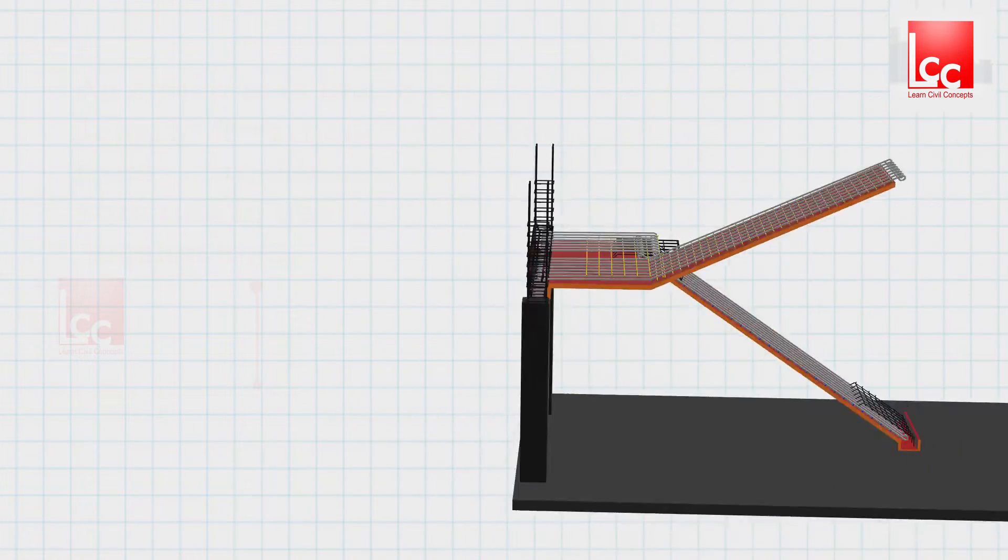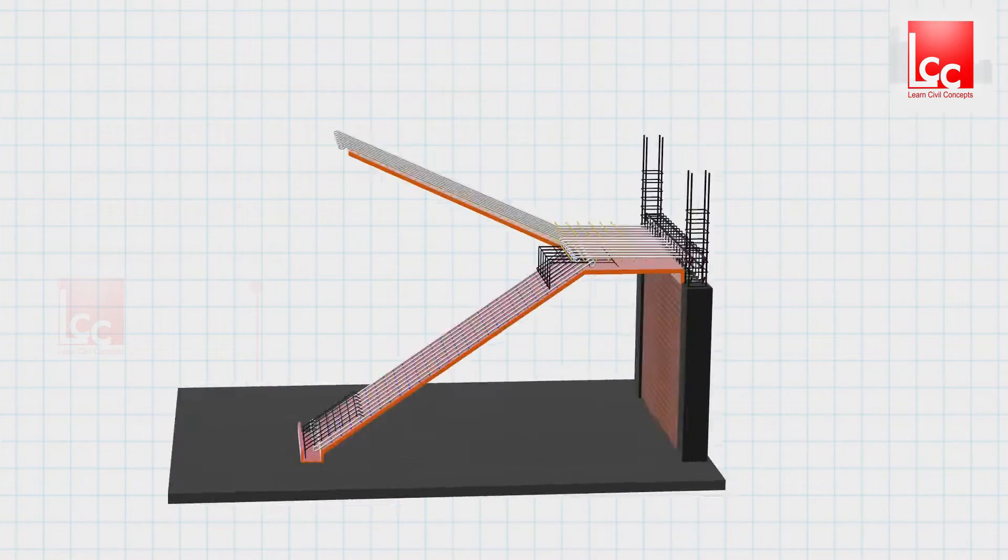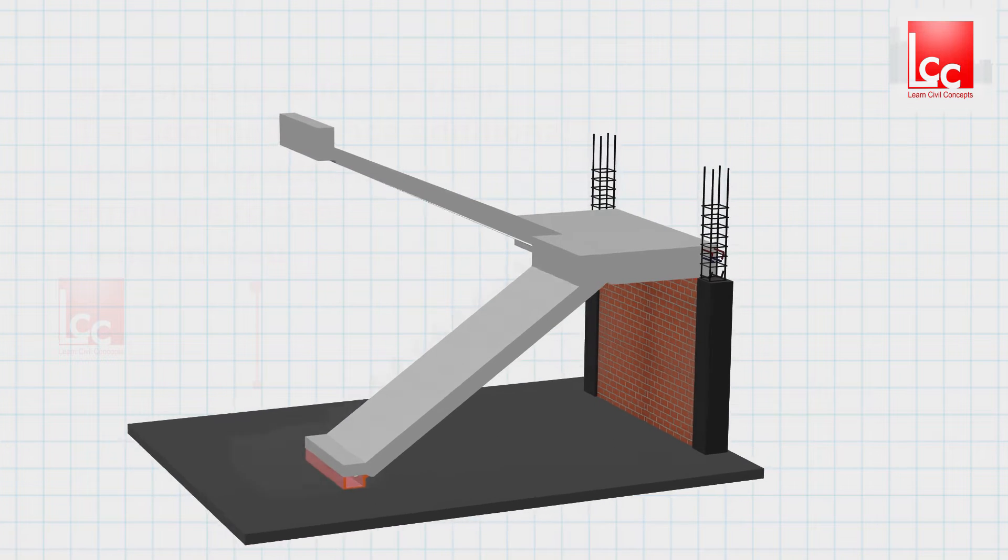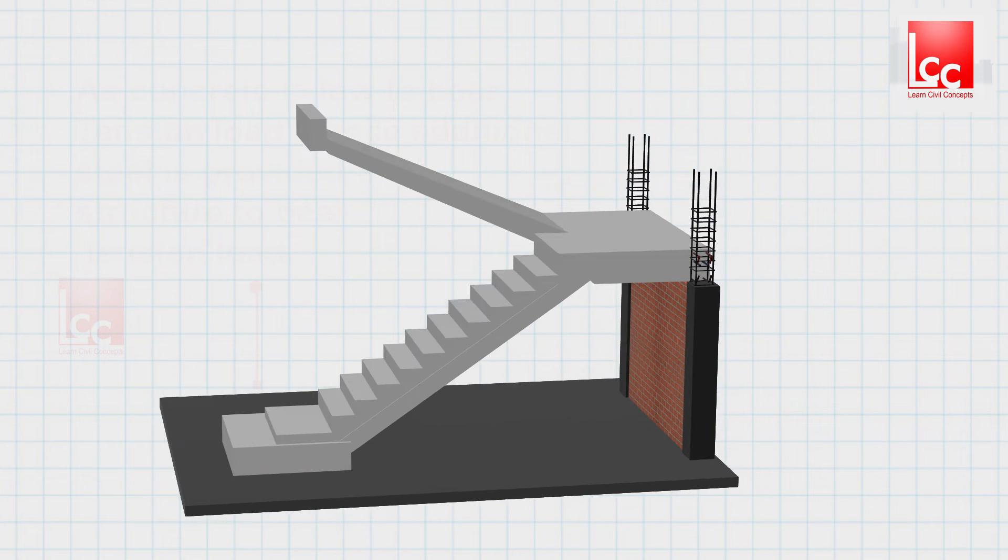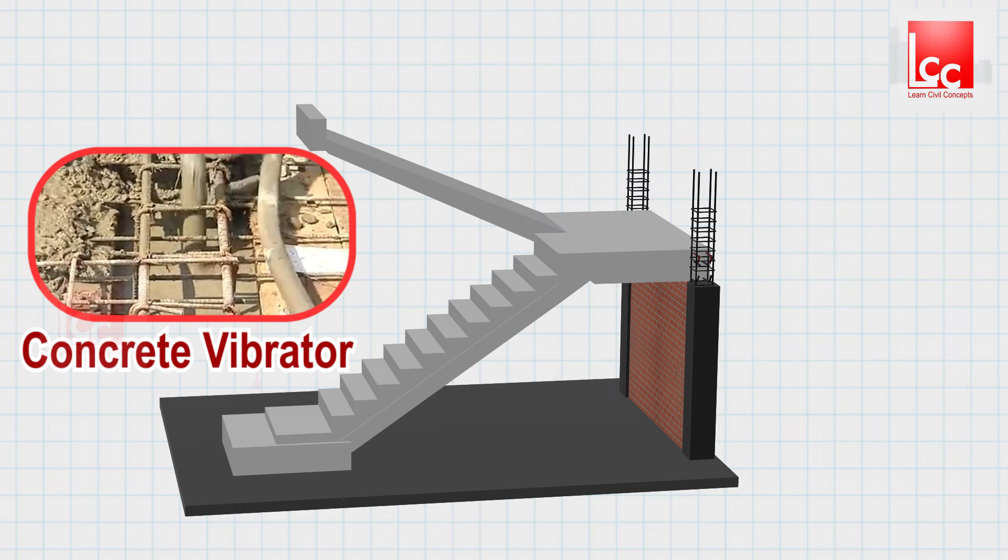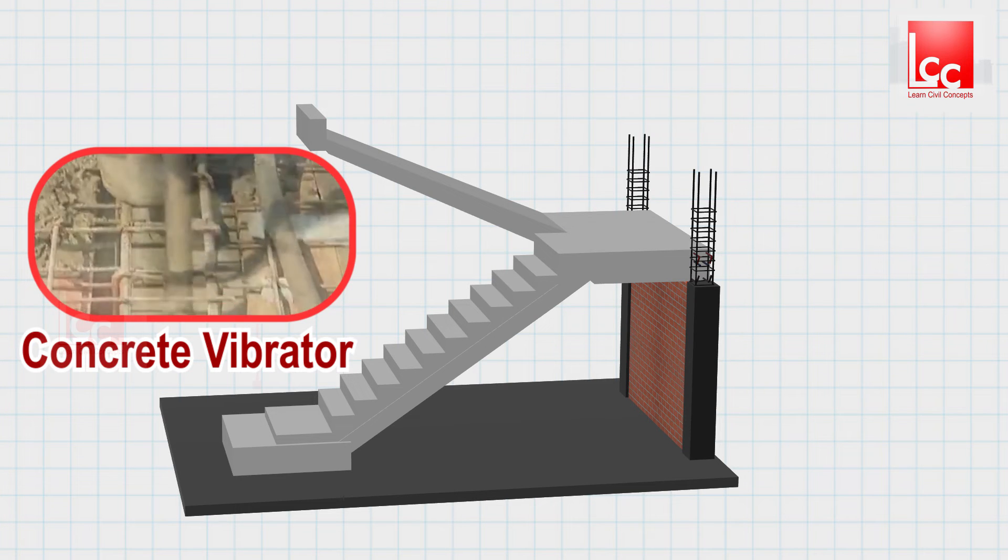After fixing the formwork perfectly, the concrete is poured from below to above. The standard mix used is 3:2:4—cement, sand, and gravel respectively. The concrete vibrator is used while pouring the concrete to completely fill the gaps and avoid honeycomb formation.